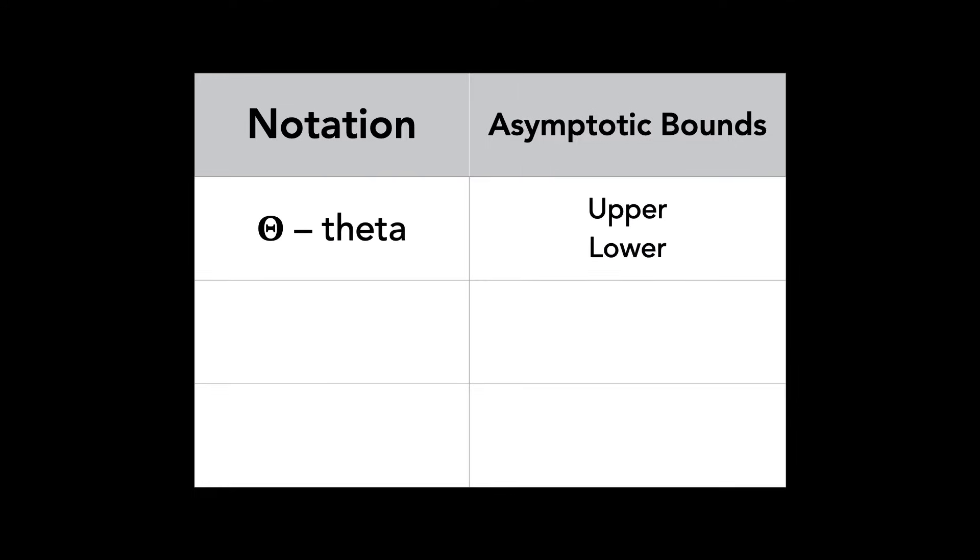Theta notation is an upper and lower bound, big O notation is only an upper bound, and big omega notation is only a lower bound.